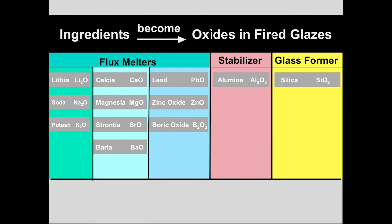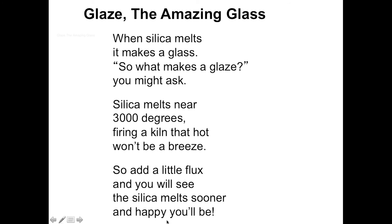Ingredients become oxides in fired glazes. We have our glassformer silica, our stabilizer alumina that holds it on the pot in the melt, and only 10 flux melters. This is what glaze chemistry is really all about — these 12 oxides, and which ingredients can I find those in? As a little poem: when silica melts, it makes a glass. Silica melts near 3,000 degrees, but firing a kiln that hot won't be a breeze. So add a little flux and you will see the silica melt sooner and happy you'll be.